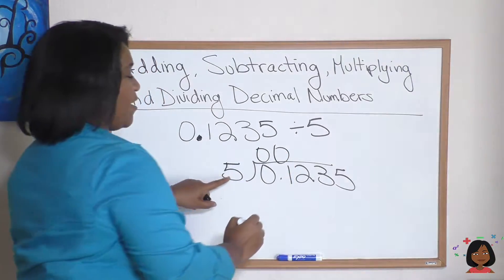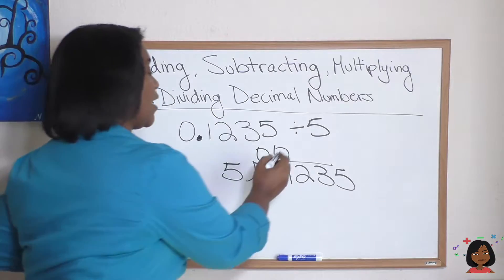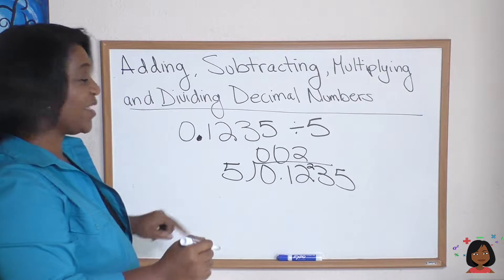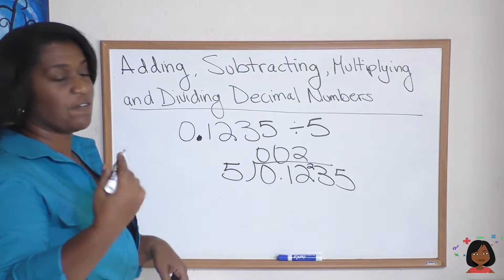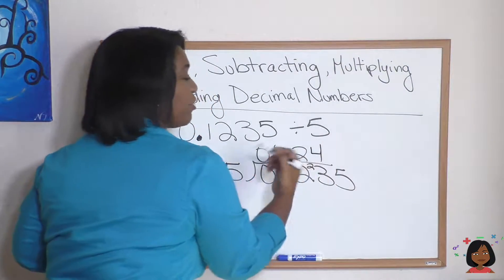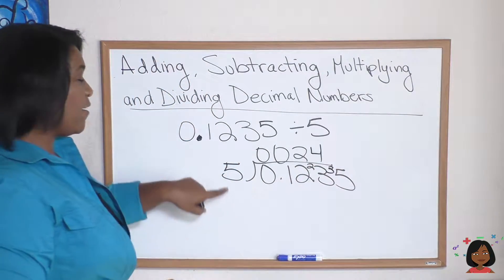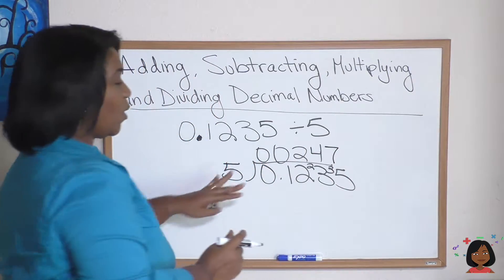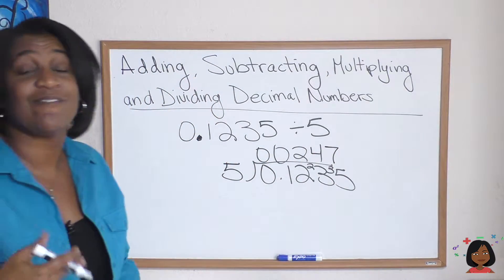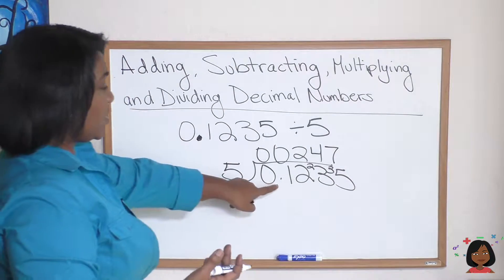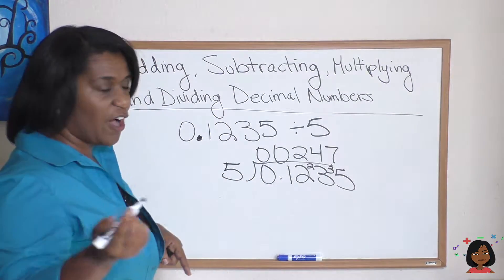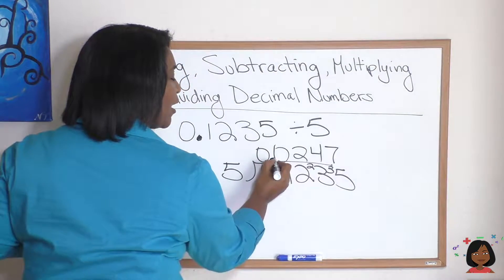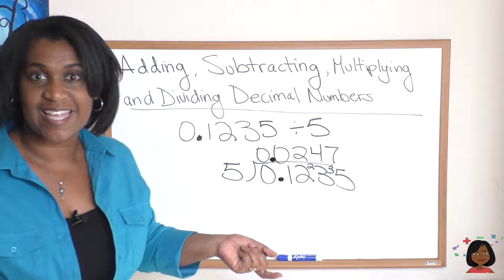5 goes into 12, 2 times with 2 left over. We're going to put our 2 up here. We're doing mental math. 5 goes into 23, 4 times with 3 left over, so we're putting it up there. 5 into 35 is 7. Okay, so are we done? No, we haven't accounted for our decimals yet. So let's do it. With division, all you have to do is take your decimal where it's at and bring it right up. That's it.